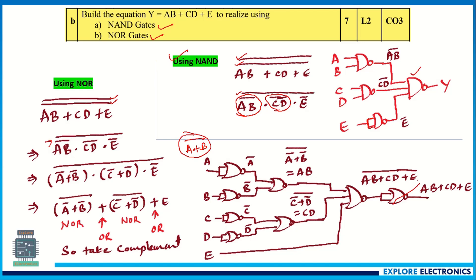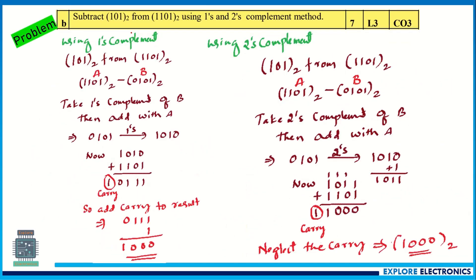For NOR gate implementation, simplifying the double-bar expression yields (Ā+B̄) + (C̄+D̄) + E. Each parenthesized group is a NOR gate output. Combining with another NOR gate gives the OR of the groups, but a final NOR gate acting as an inverter eliminates the remaining bar, producing the correct output Y = AB + CD + E.